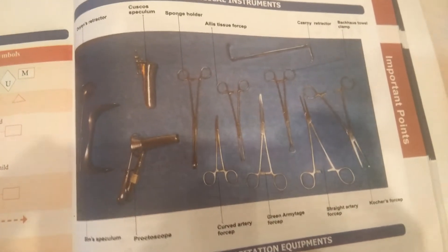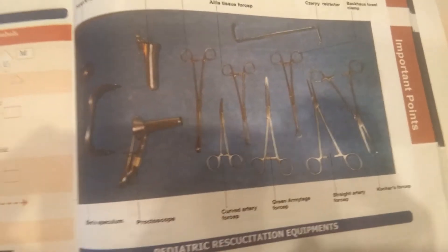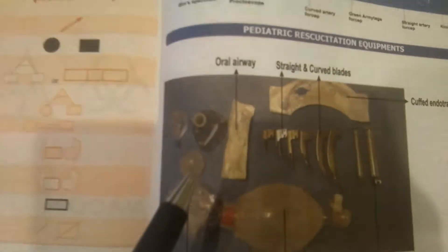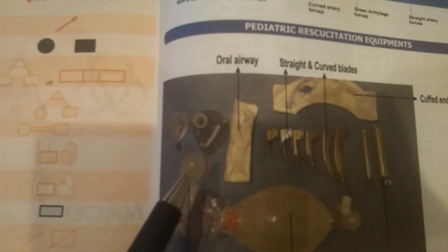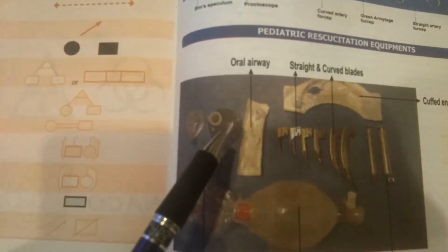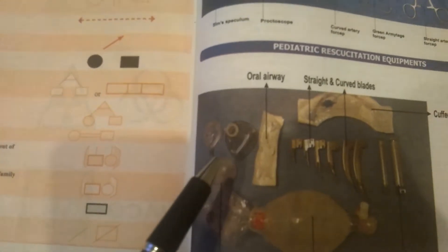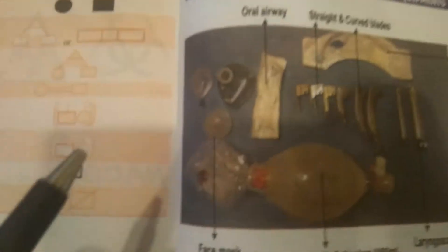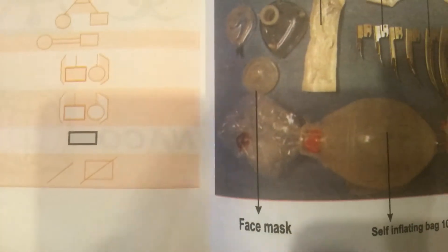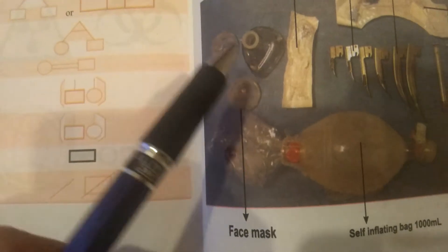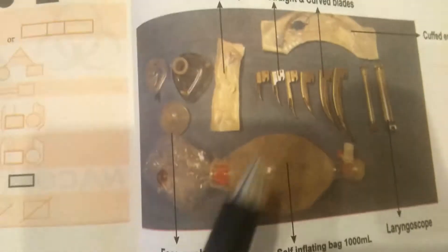Hello guys, this is the image-based MCQs. I am going to show some instruments and you have to identify them. You see here this one, this one, and this one — this is looking like a mask, so face mask. These are the face masks.